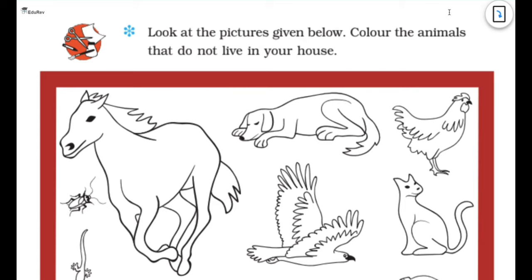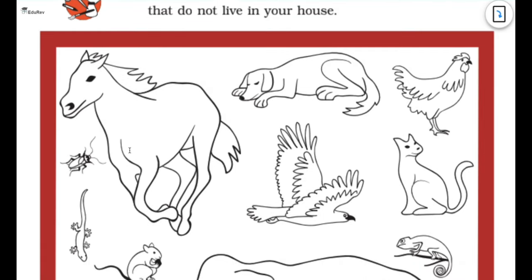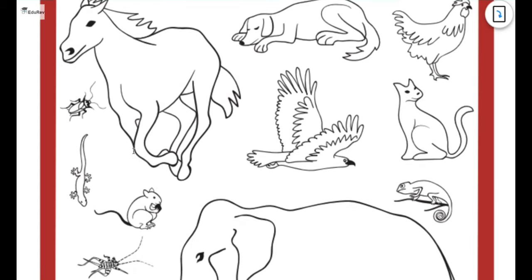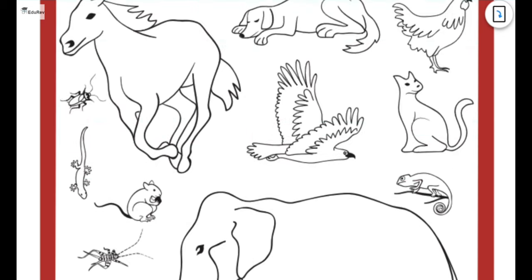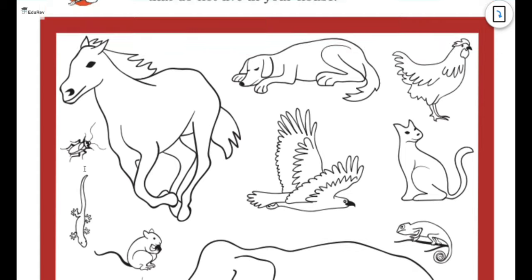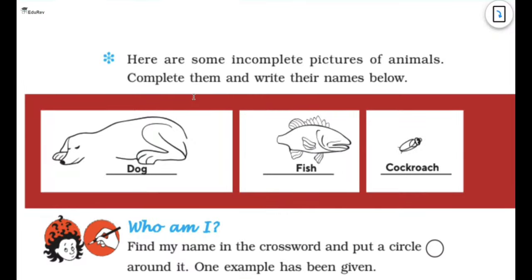Look at the pictures given below. Color the animals that do not live in our house. So we have to basically color the animals that do not live in our house. Actually what you can do is you can color the ones that live in your place. And just actually you have to color the ones that do not live at your place. So you have to color the ones that do not live at your place and just leave the ones which live at your place.